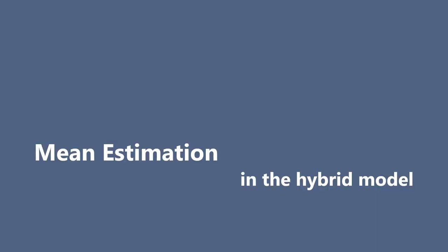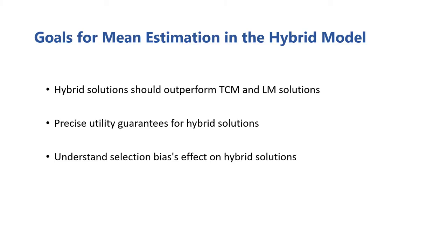So we want to be able to use this hybrid model to tackle the problem of differentially private mean estimation. In particular, we want to find a solution in the hybrid model that will provably always perform well compared to analogous solutions in the classic trust models. Additionally, we want precise mathematical utility guarantees for our solution so that we can know what kind of error to expect before actually performing the computation.